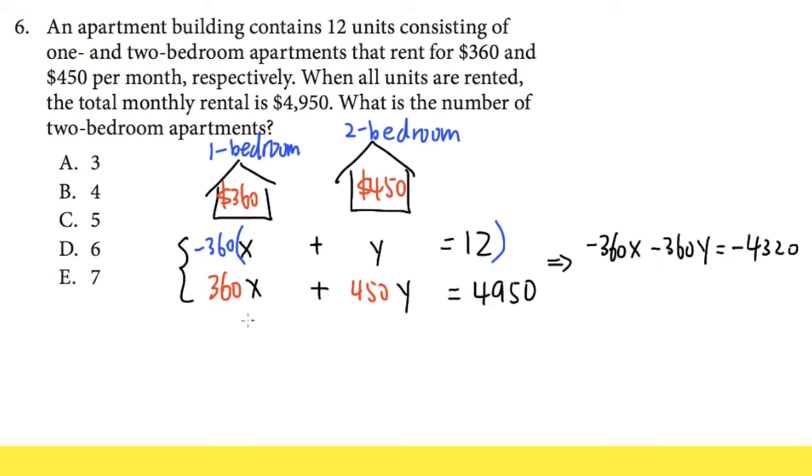And then for the second equation it will stay the same, so let me just write it down again here: 360x plus 450y, this will be 4,950. Then what we can do is just add up these equations, and you will see that for the first part here, the negative 360x will cancel out exactly with the positive 360x, and that's the purpose of the elimination method.